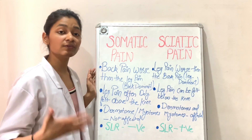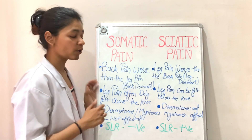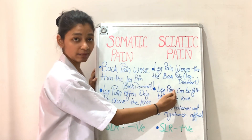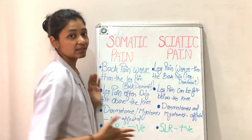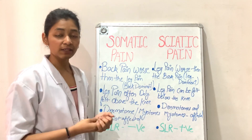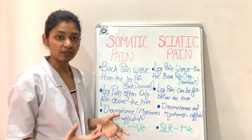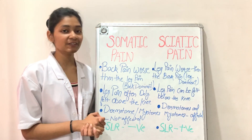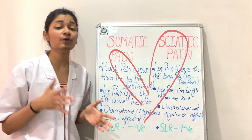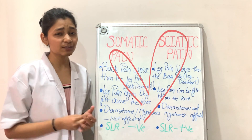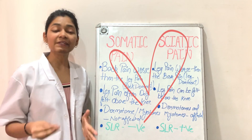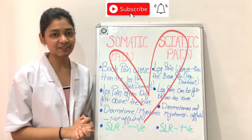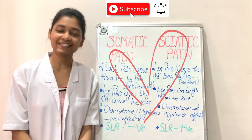Common examples that can lead to referral of symptoms into the leg include sacroiliac joint dysfunction, facet joint dysfunction, ligament injury, or muscle injury — all of which can cause referred pain in the legs. These are the differentiating features you can use to distinguish between somatic referred pain and sciatic pain, where the sciatic nerve is compressed due to a herniated disc. I hope I have cleared many of your doubts — if you found it helpful, please like, share, and subscribe to my YouTube channel, Physio's Healing Touch.